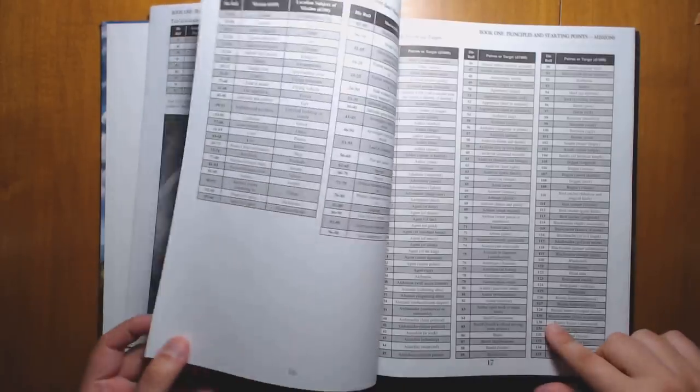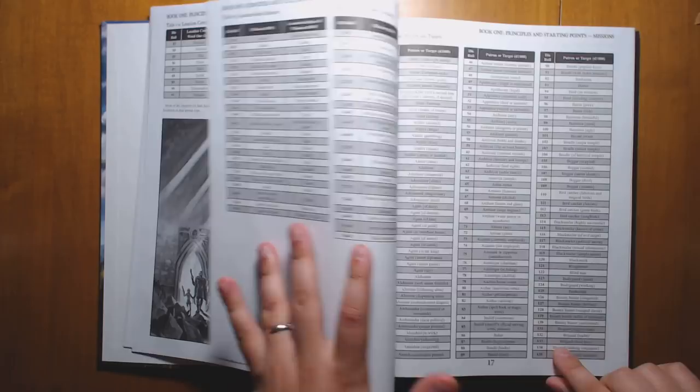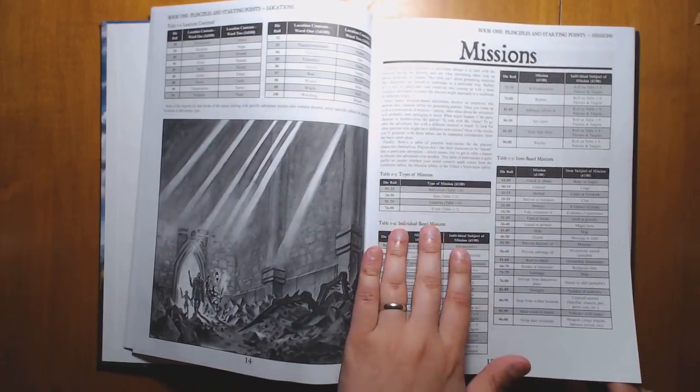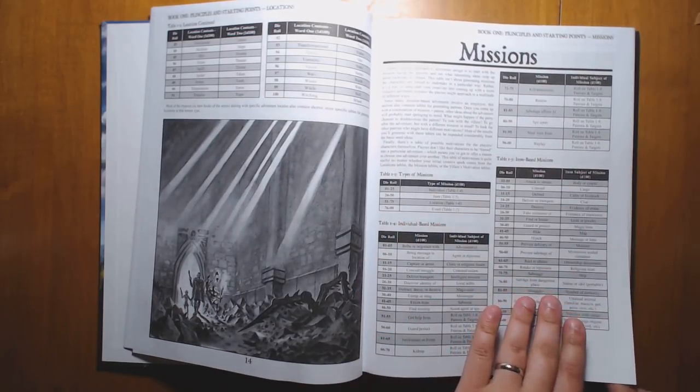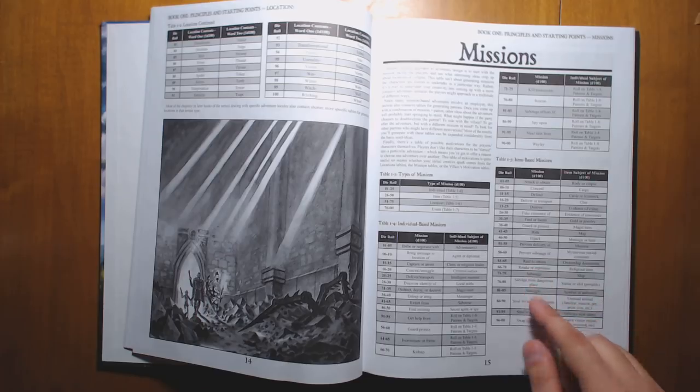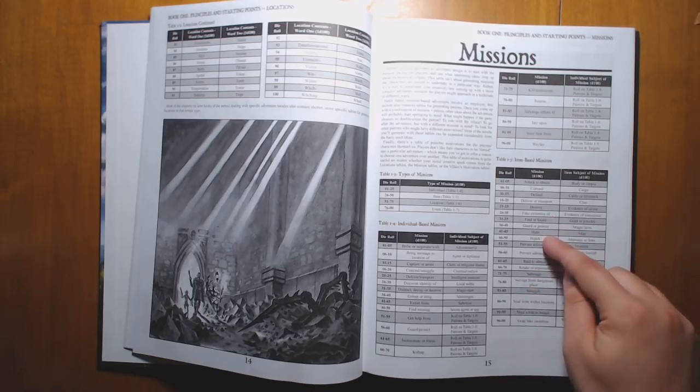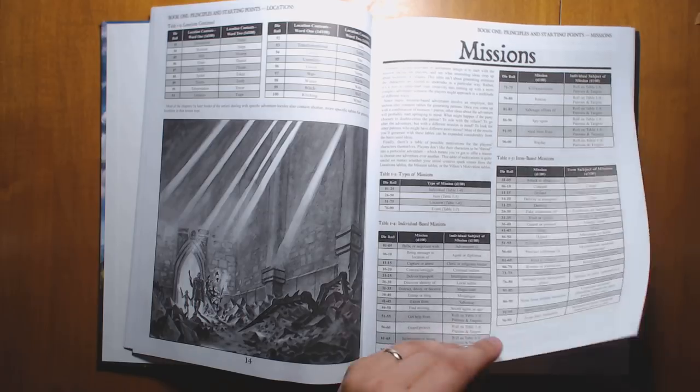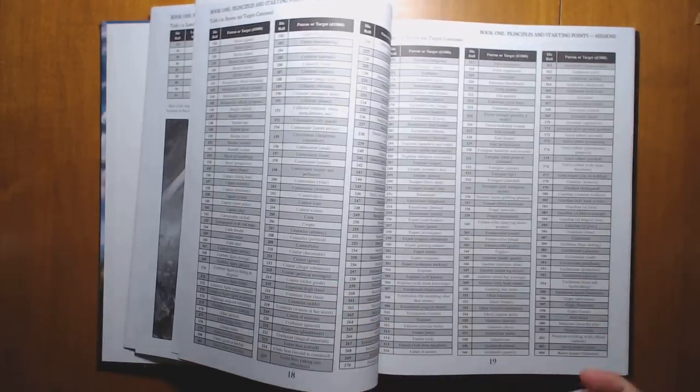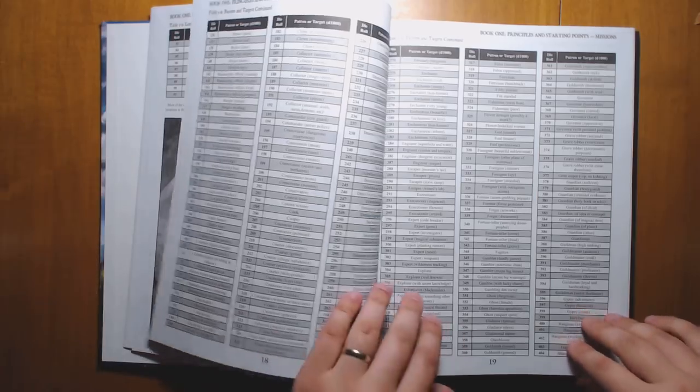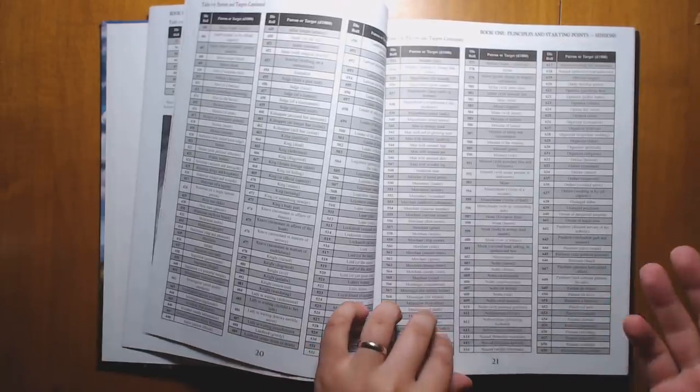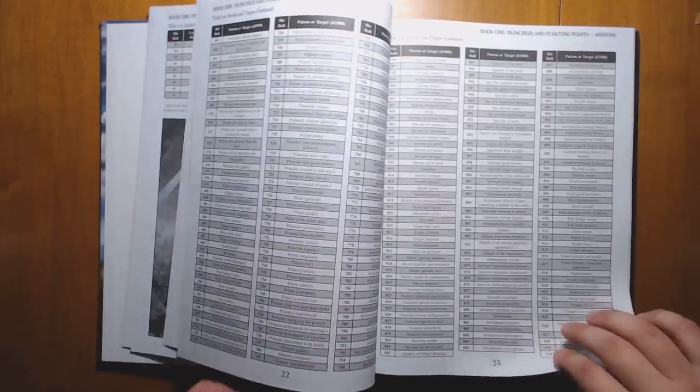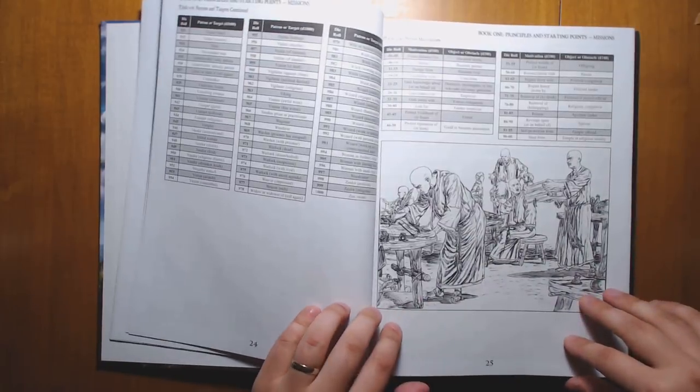We have random tables for missions. Along with different types of missions, we can have individual ones, item-based missions, with different verbs for what you're going to be doing. Guarding something, hijacking it, preventing the delivery of, and so on. Along with lots of random tables that can be used to flesh these things out. A D1000 table of different types of NPCs, patrons, and targets that you might encounter.